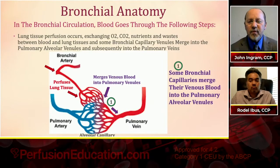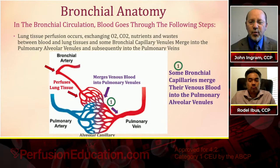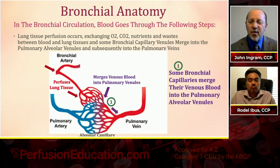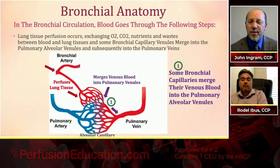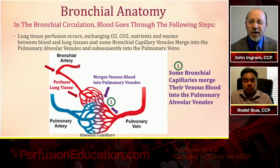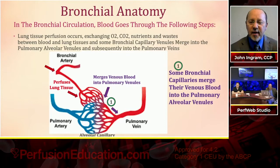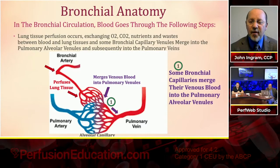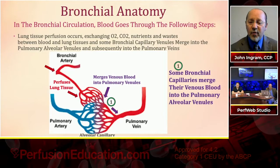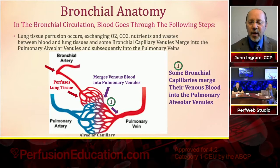Here is where it gets interesting. Lung tissue perfusion occurs — exchanging oxygen, carbon dioxide, nutrients, and waste between blood and lung tissues. Some of these bronchial capillary venules merge into the pulmonary alveolar venules and subsequently empty into the pulmonary vein. So your bronchial capillaries — the ones perfusing the lung tissue — some of their venules merge into the venules of the pulmonary vein, depositing venous blood into the pulmonary vein, which travels back to the left atrium.